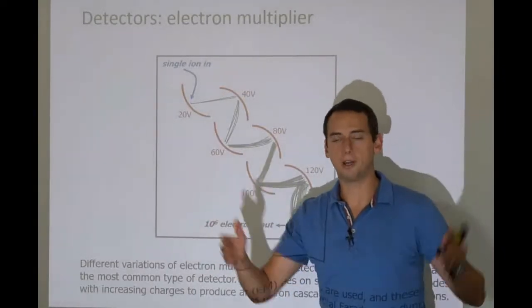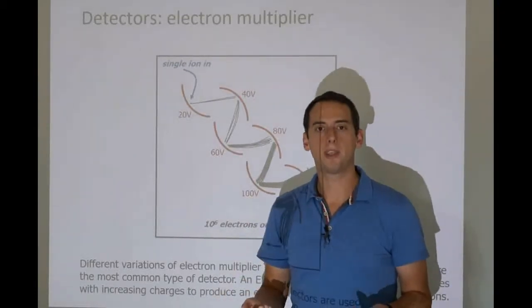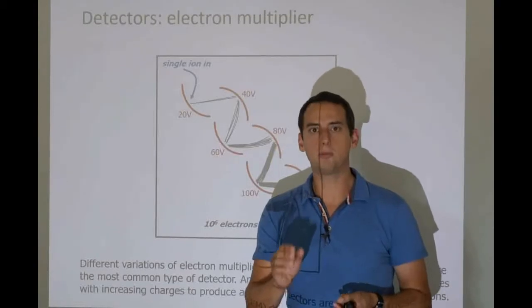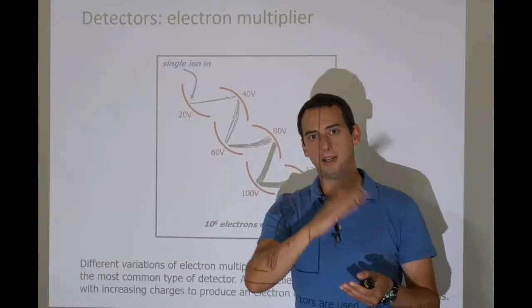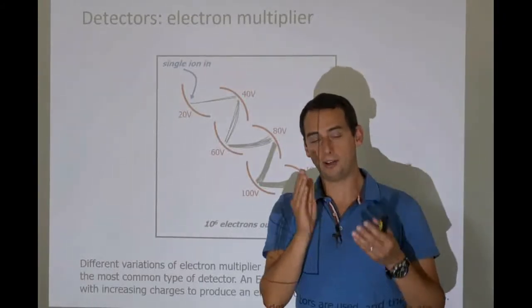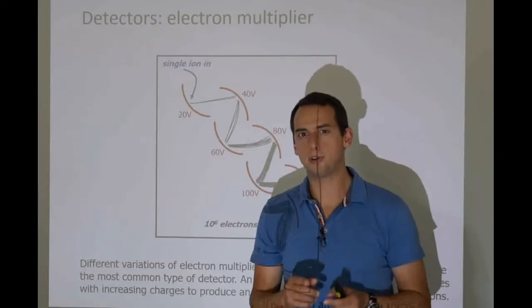We're pushing ions through a system, a tube or a box or what have you. And these ions, they generate electrical currents. So if we were to have very sensitive measurement devices, we could measure the current generated by these ions passing through our detector. And this current actually gives us our signal intensity.